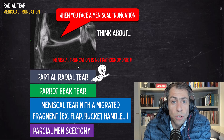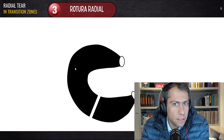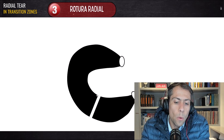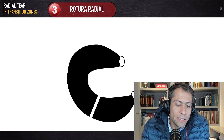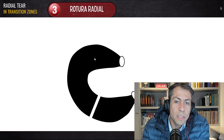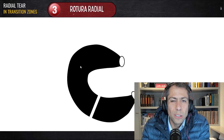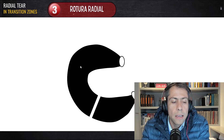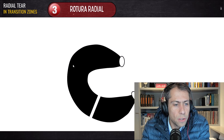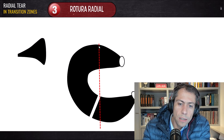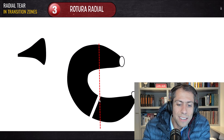Now I want to talk about the radial tears that occur in the areas where the meniscus is curved — because in these transition areas the radial tear looks like a radial oblique or parrot beak tear. I'm going to show you some cases of that.